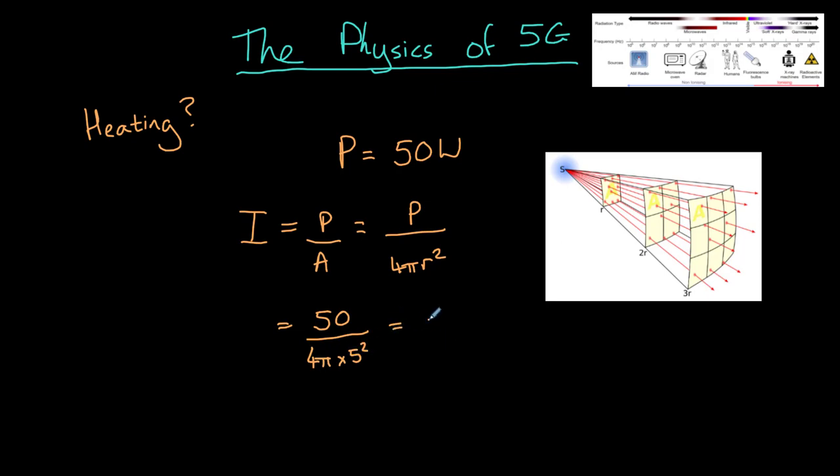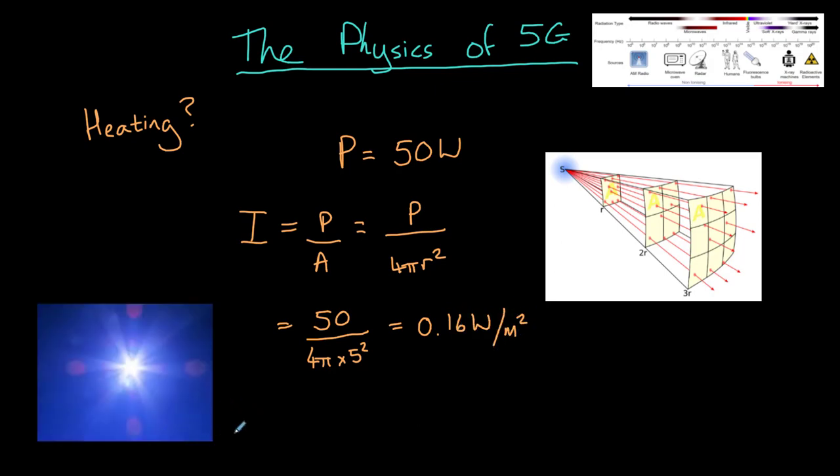For comparison, the sunlight reaching the Earth's surface has an energy of approximately 1,000 watts per square meter. So even if you're standing really close to a 5G mast, you are receiving about 6,000 times less radiation than on that sunny day. The heating effect of 5G and Wi-Fi is therefore almost zero.